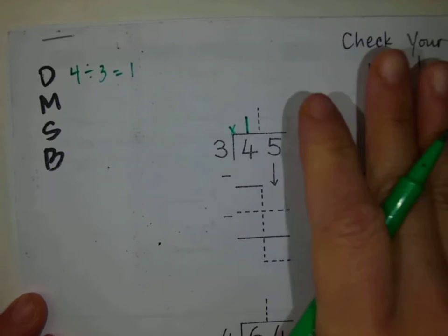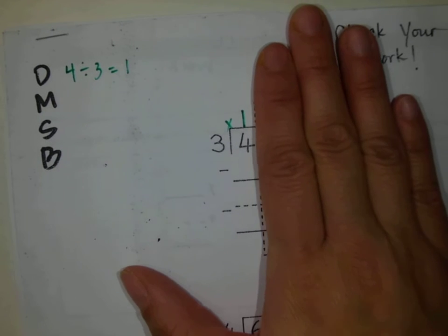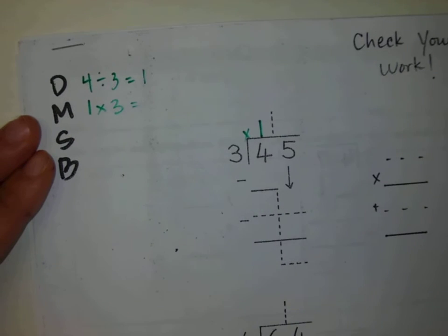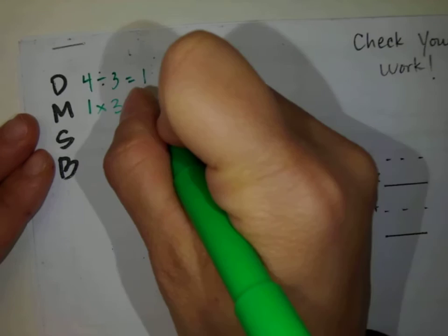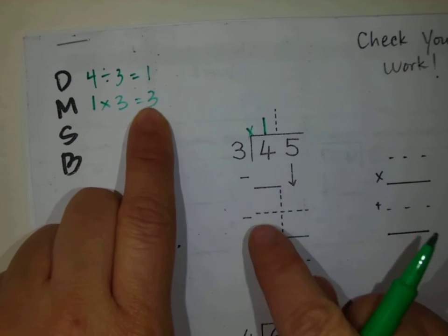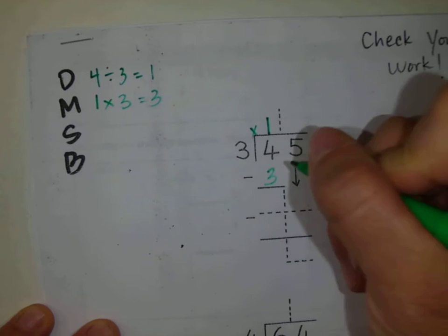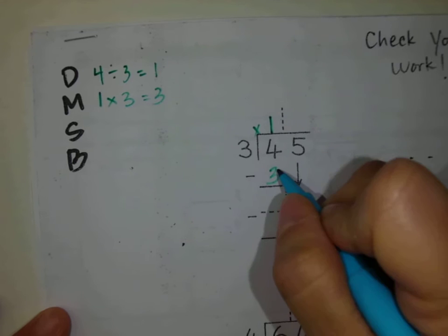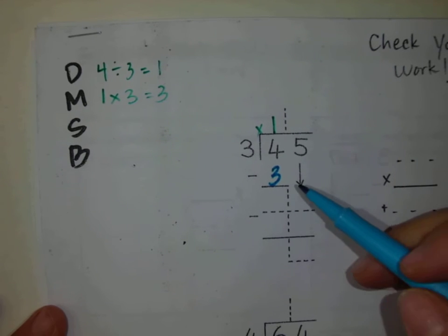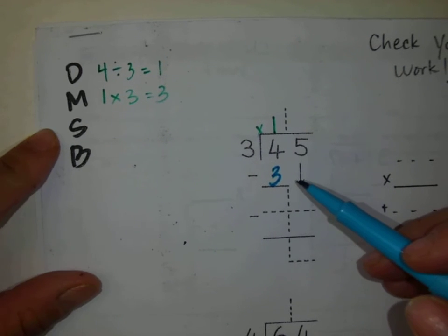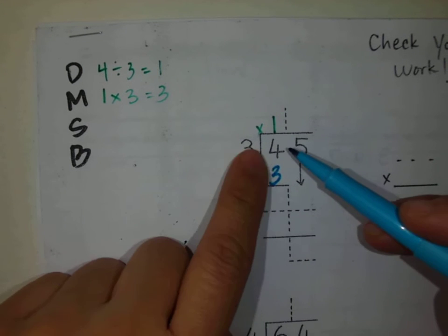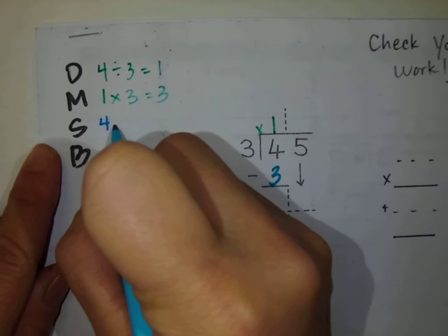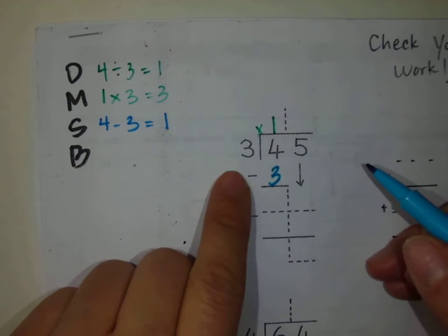Now the second step — as we say, is mommy multiply. We're going to multiply 1 times 3. 1 times 3 equals 3, so that product, 3, goes right here. I'm going to switch to another color. The third step is sister subtract. We simply subtract 4 minus 3. 4 minus 3 equals 1.